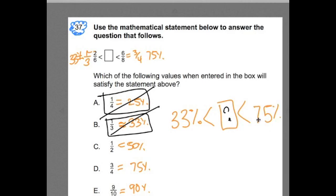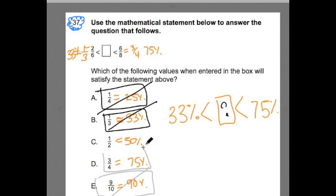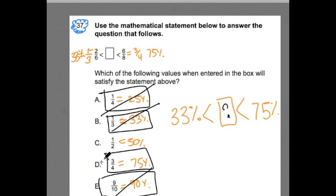What about 90%? 90% is greater than 75%, and we're looking for something that's less than 75%. So we cross that one off. Same thing with three-fourths. We're looking for something that's less than 75%. And so we get to one-half, which is 50%, and I think that works. 50%, we could think of this as 33% is less than 50%, or 50% is greater than 33%, and 50% is less than 75%, and that one works.